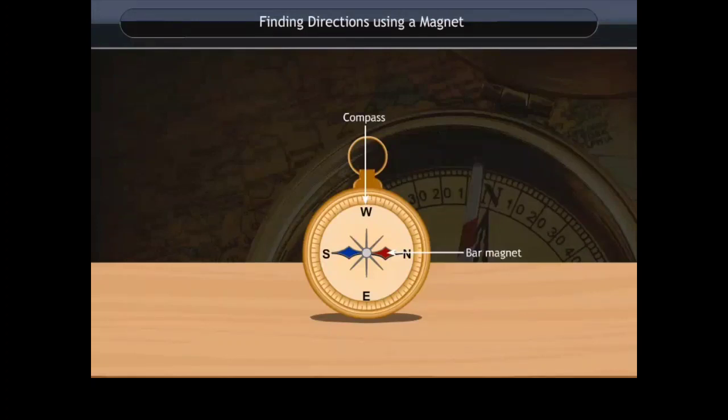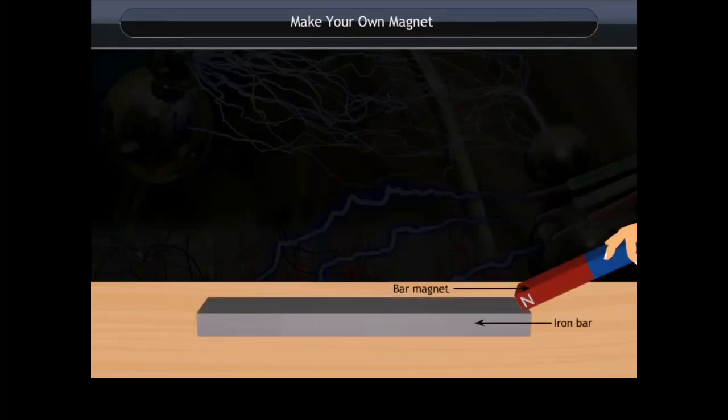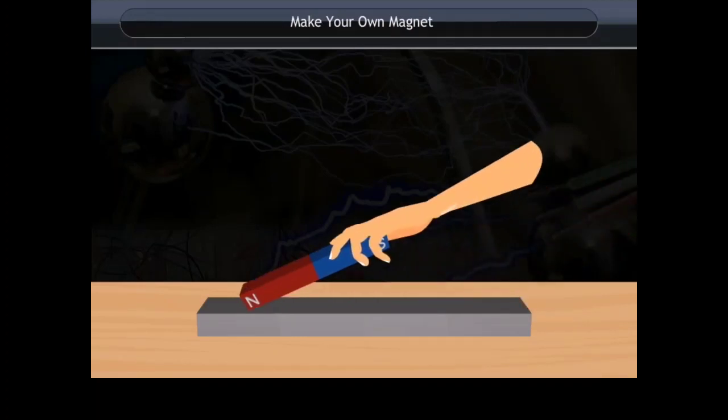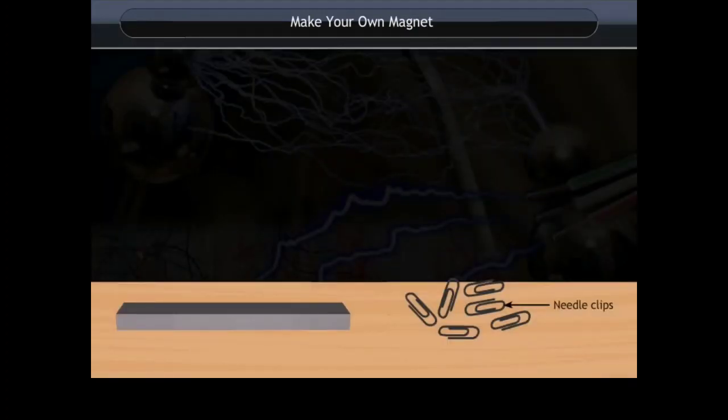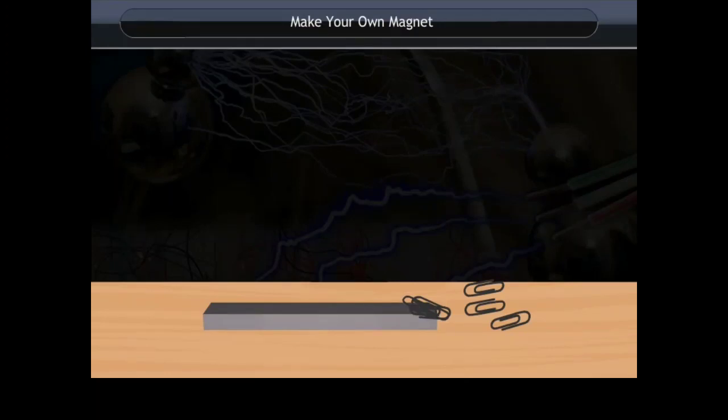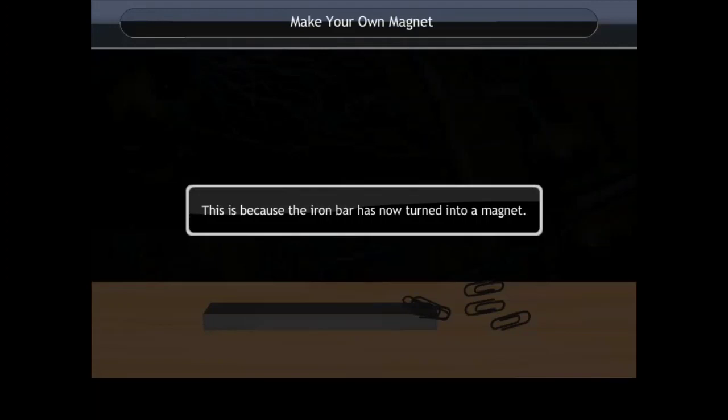In fact, the needle of the magnetic compass is a bar magnet itself. Make your own magnet: Take a bar magnet and an iron bar. Now rub the bar magnet 30 to 40 times over the iron bar. Bring the iron bar near the needle clips. You will see that the iron bar attracts the needle clips. This is because the iron bar has now turned into a magnet.